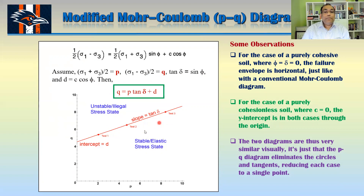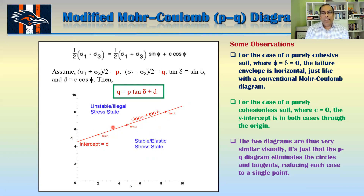You can plot p and q for two or three different tests, draw a best-fit line, and identify your failure plane. Even though all the points here fall on the same line, in actual cases they might be slightly off, so you draw the best-fit curve. That's the p-q diagram — much cleaner and easier to develop than the Mohr circle approach because you don't have to draw any circles or tangent lines.